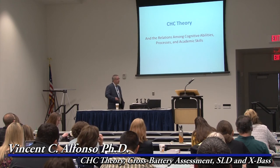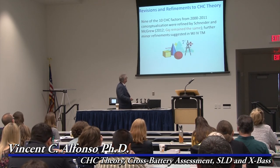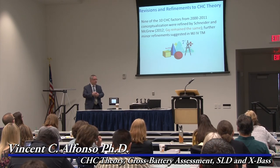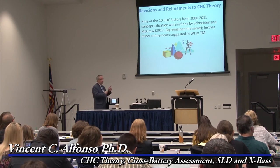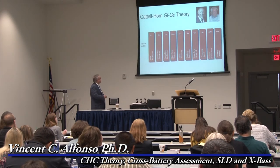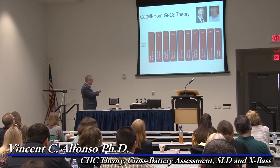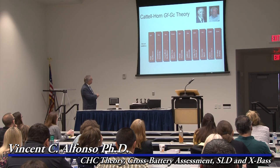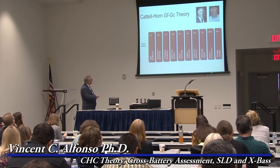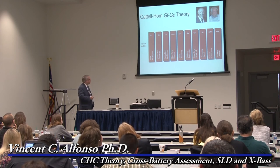CHC theory and the relations among cognitive abilities, processes, and academic skills: nine of the ten factors from 2000 to 2011 were refined in a chapter by Schneider and McGrew in 2012, with additional refinements in the WJ-4 technical manual. This is Raymond Cattell, John Horn — his student, his protégé — and this is basically GfGc theory. There were about ten broad abilities, some with codes and names that differ from what we have today. Then in 1993, John Carroll published his Human Cognitive Abilities book and his Three-Stratum Theory of Cognitive Abilities.